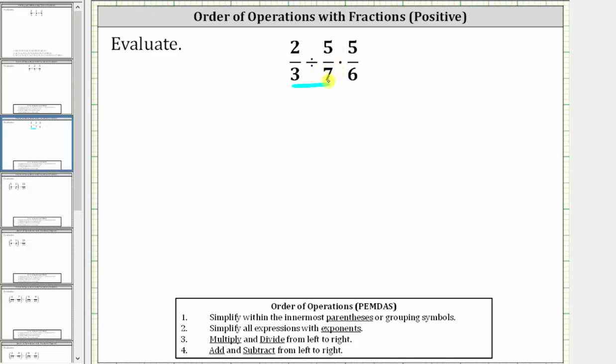Dividing by a fraction is equivalent to multiplying by the reciprocal, which means dividing by 5 sevenths is equivalent to multiplying by 7 fifths. Let's begin by writing the expression as 2 thirds